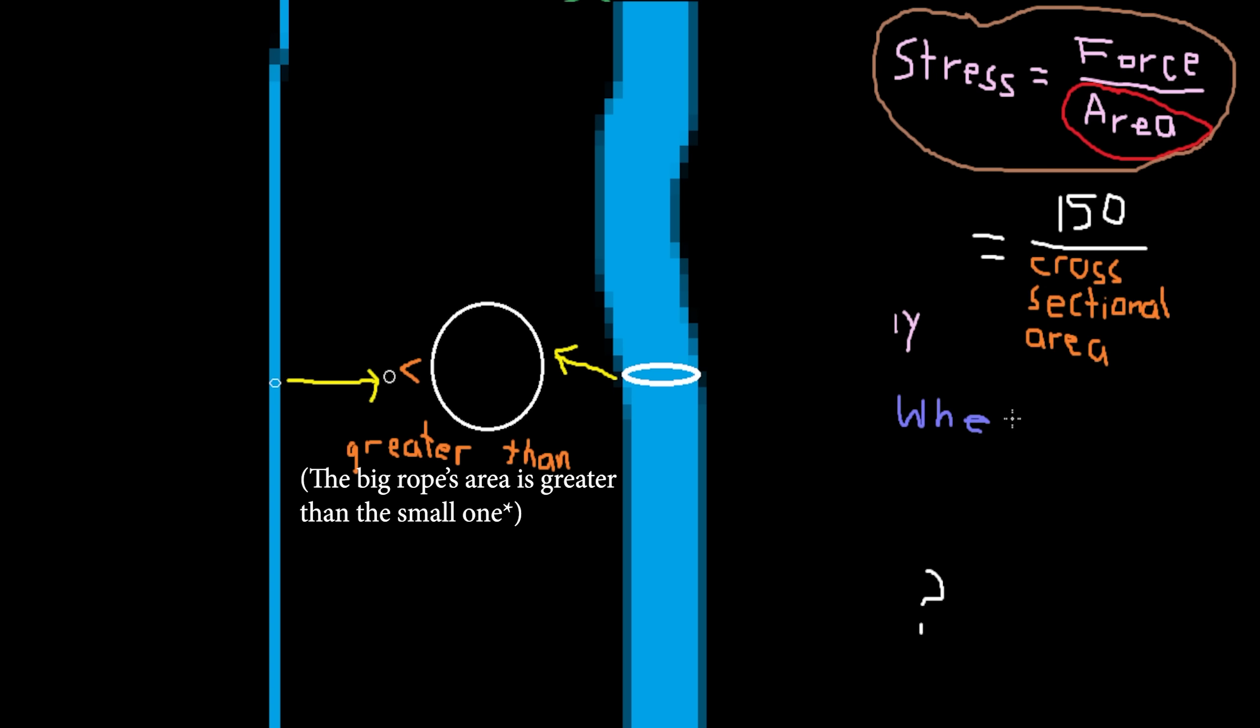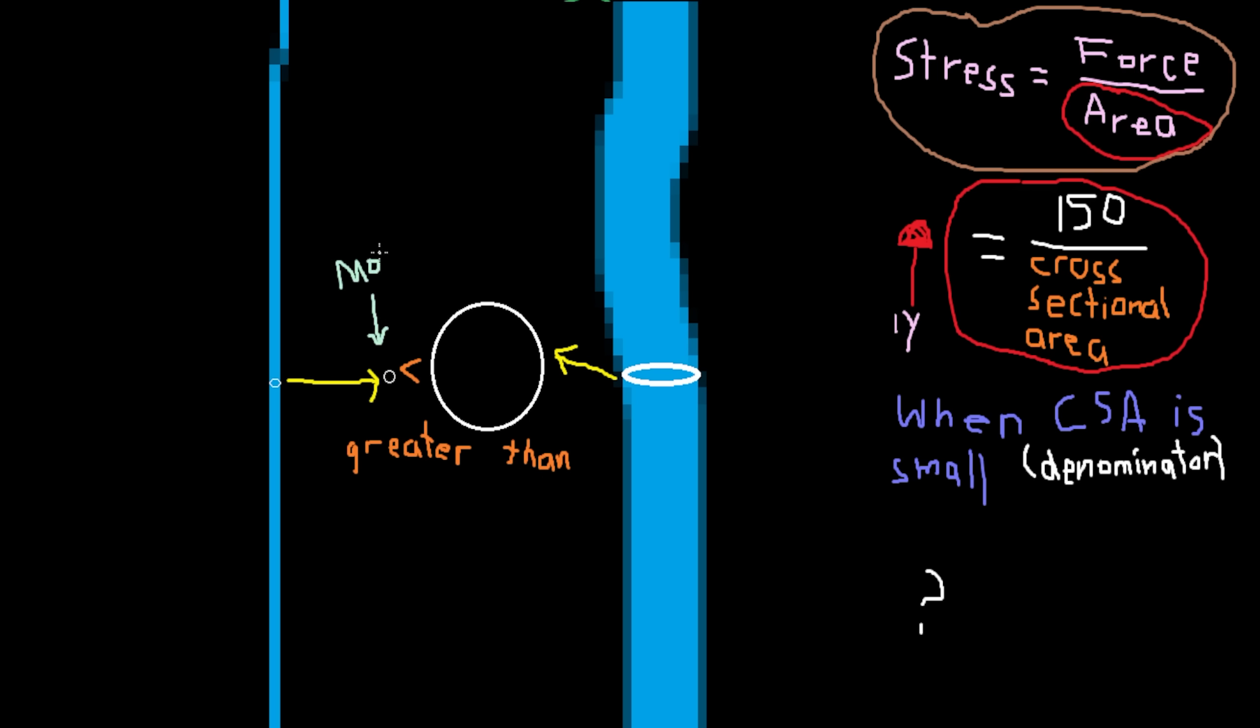When the cross sectional area is smaller, like with the thin rope, the value of this stress fraction increases. Basically, the thin rope would have more stress than the thick rope. If you chose to trust the thick rope more, your brain likely recognized it would have less stress, even if you weren't aware of what stress was exactly.